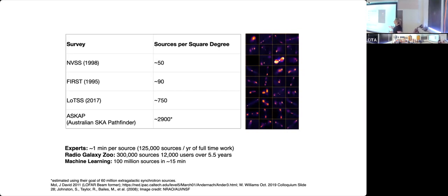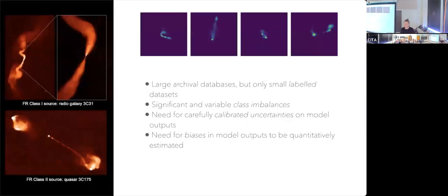If you have an AI algorithm doing this, in principle you can do 100 million sources in about 15 minutes — a very attractive proposition. However, FR1 and FR2 galaxies, like a lot of other astronomical classification problems, suffer from a number of AI challenges.